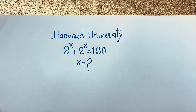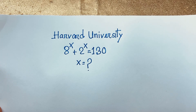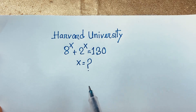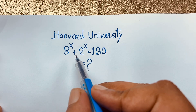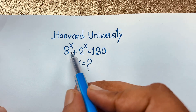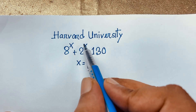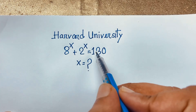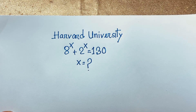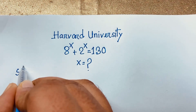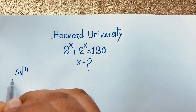Hello everyone, welcome to Russell's classroom. Today we have solved a viral math Olympiad question which is 8 to the power x plus 2 to the power x is equal to 130. x is equal to what? I will solve this interesting viral math Olympiad question using an easy method.